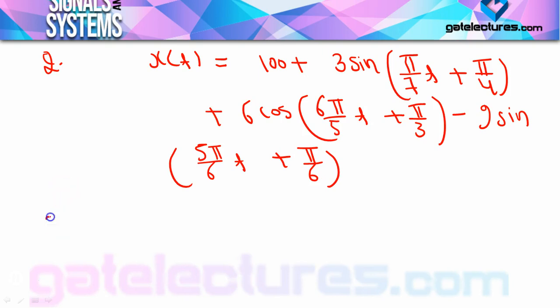Whether the Fourier series is valid or not can be checked by verifying whether the given combination of sine and cosine terms is periodic or not. If it is periodic, then the Fourier series is valid.